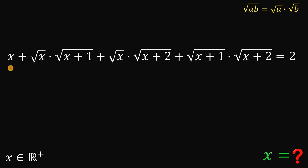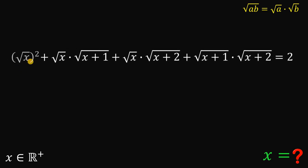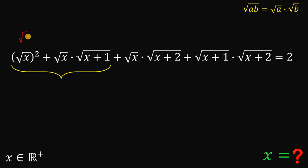And how about x? So x can be written as square root of x raised to the power of 2. Now, what we're going to do is to focus on these two terms. Take note that square root of x raised to the power of 2 can be written as square root of x multiplied by square root of x.